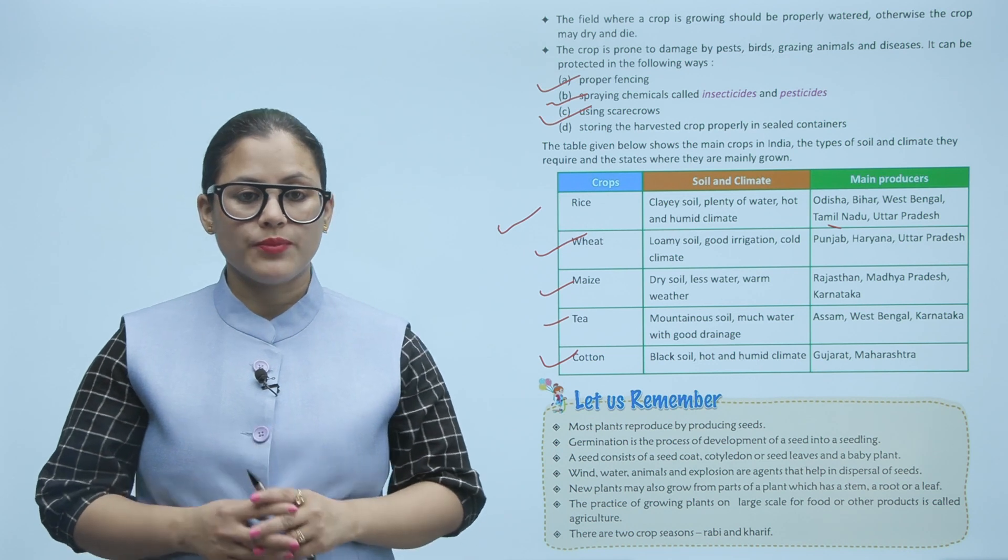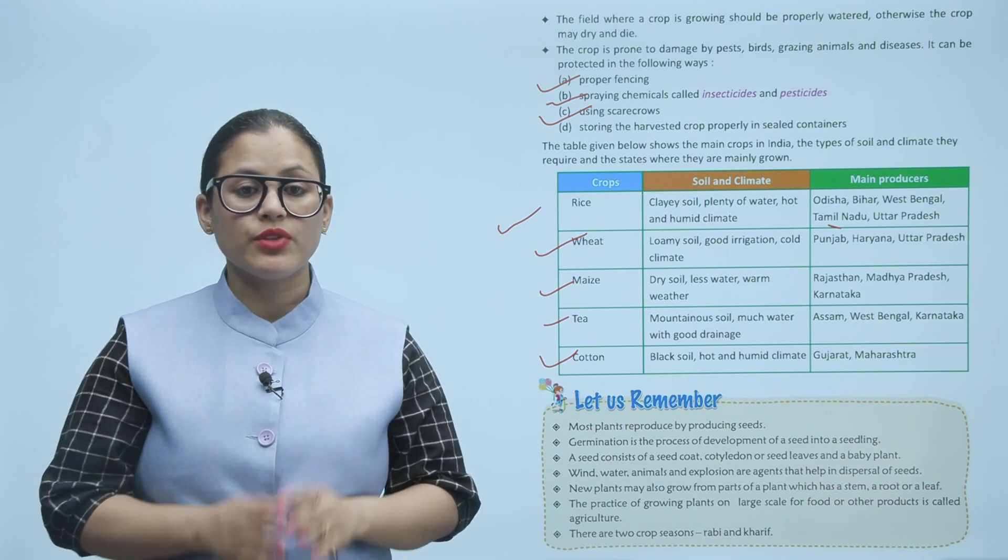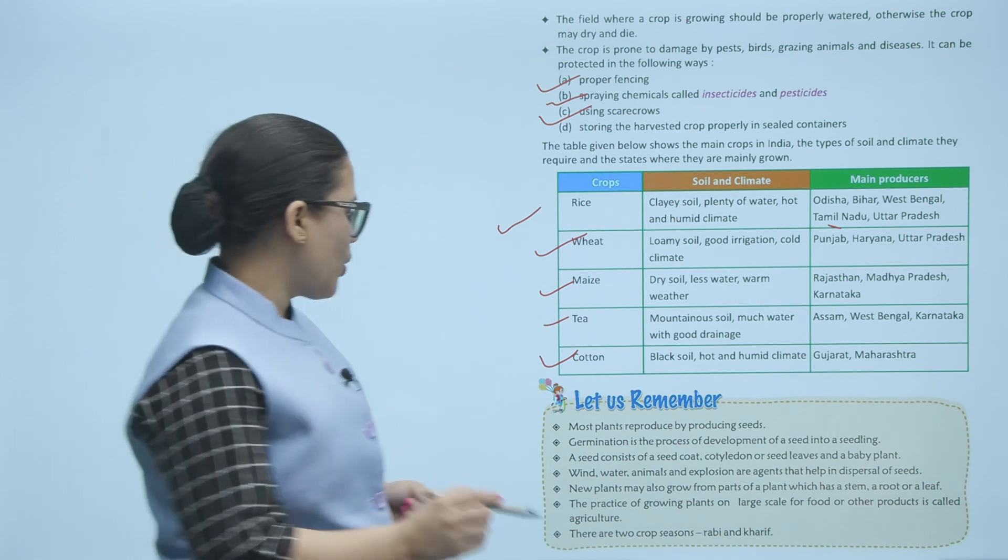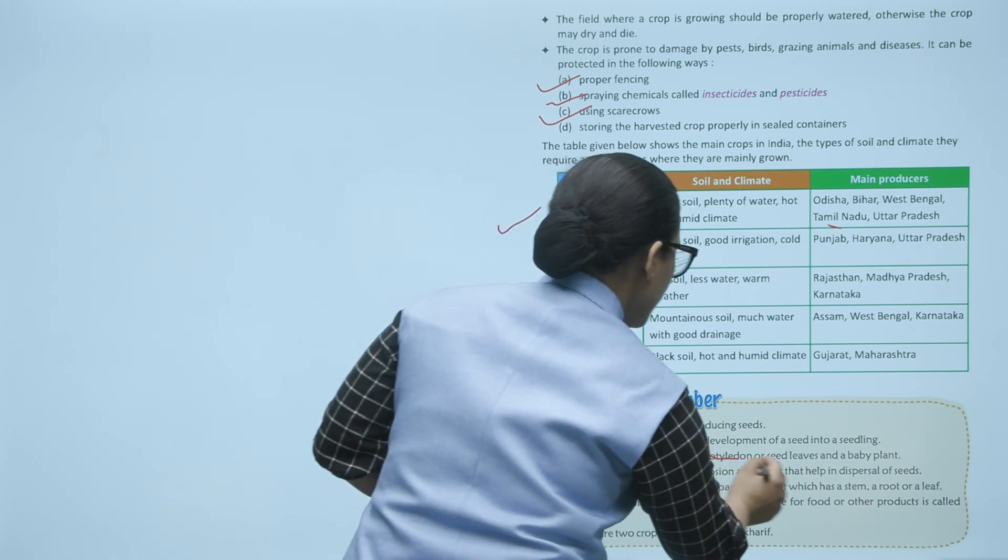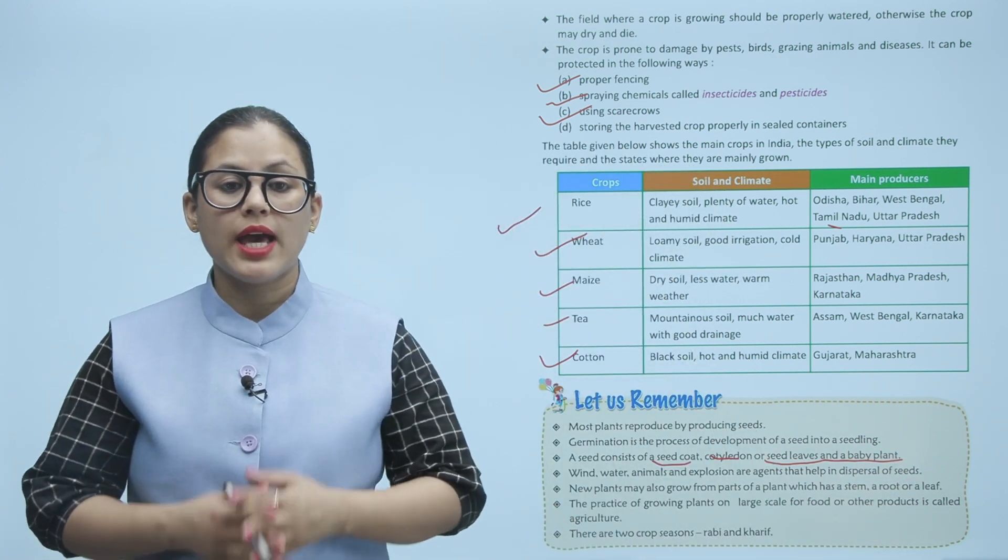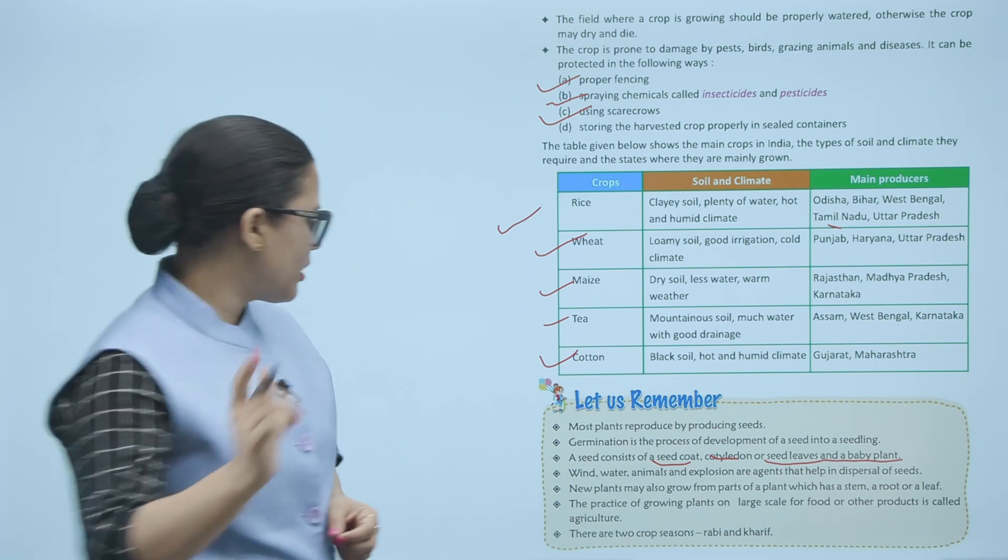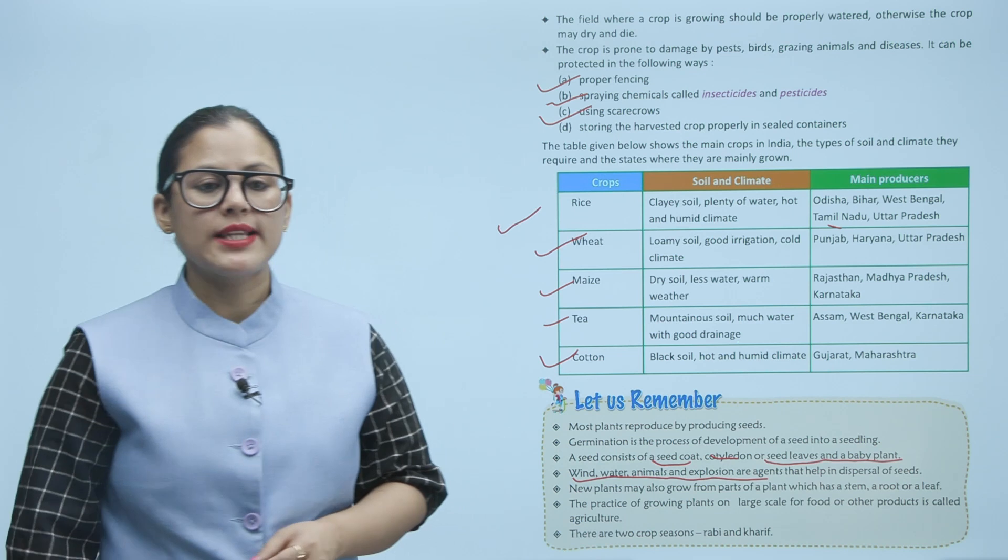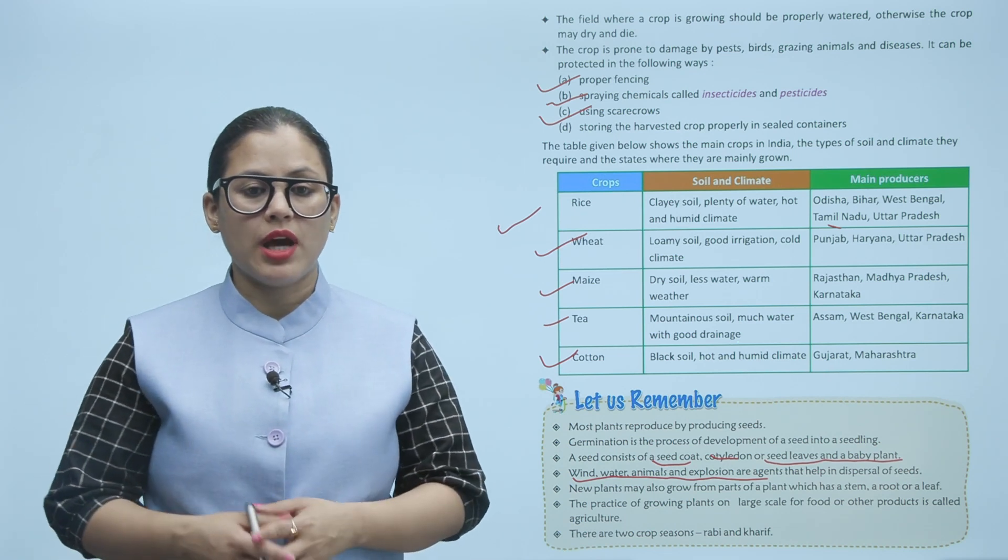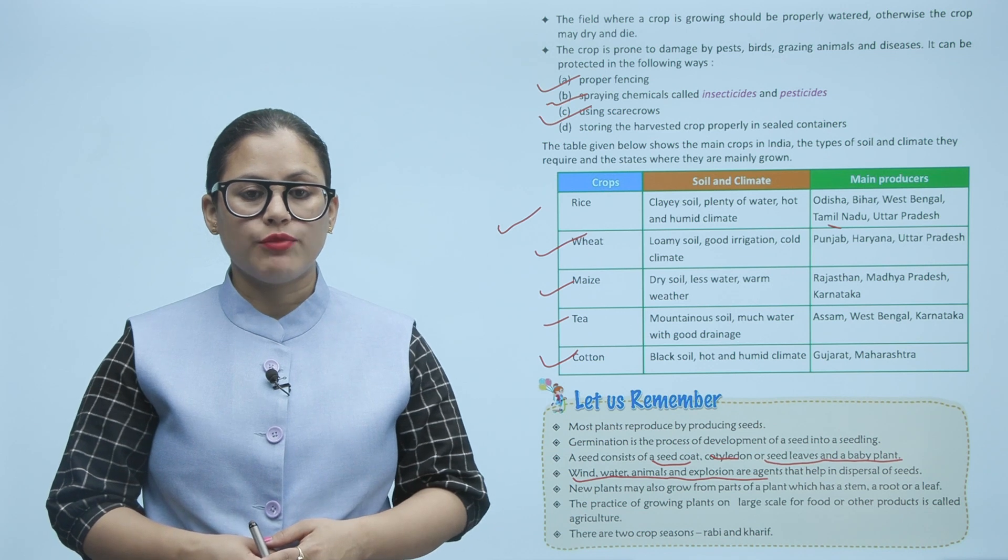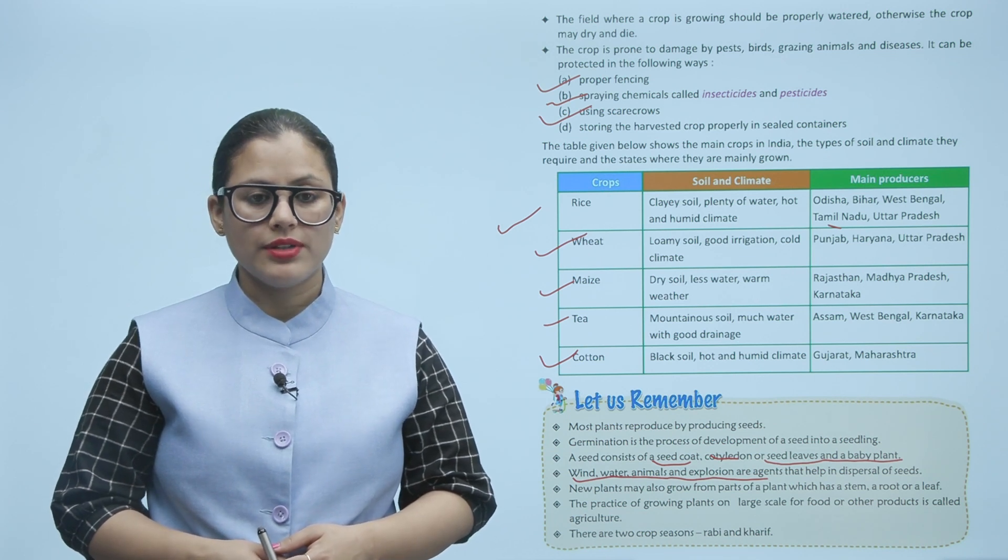Let us remember: Most plants reproduce by producing seeds. Germination is a process of development of a seed into a seedling. A seed consists of seed coat, cotyledon or seed leaves, and a baby plant. Wind, water, animals, and explosion are agents that help in dispersal of seeds. Remember that new plants may also grow from parts of a plant such as stem, root, or leaf. The practice of growing plants on large scale for food or other products is called agriculture. There are two crop seasons: rabi and kharif.